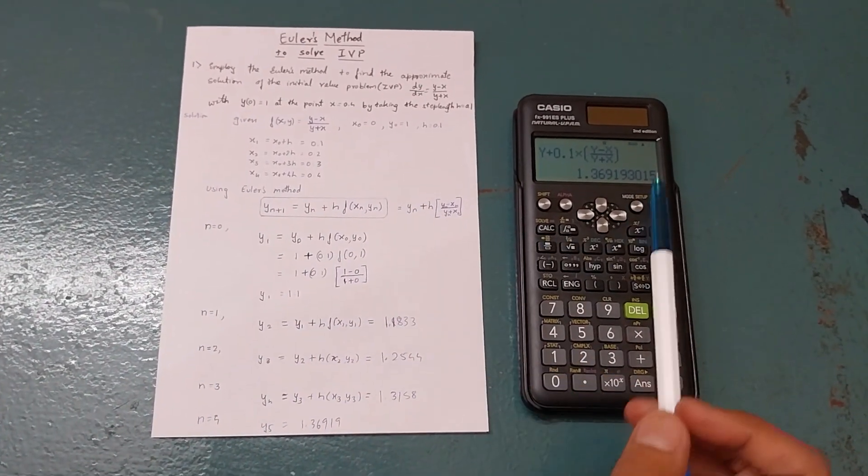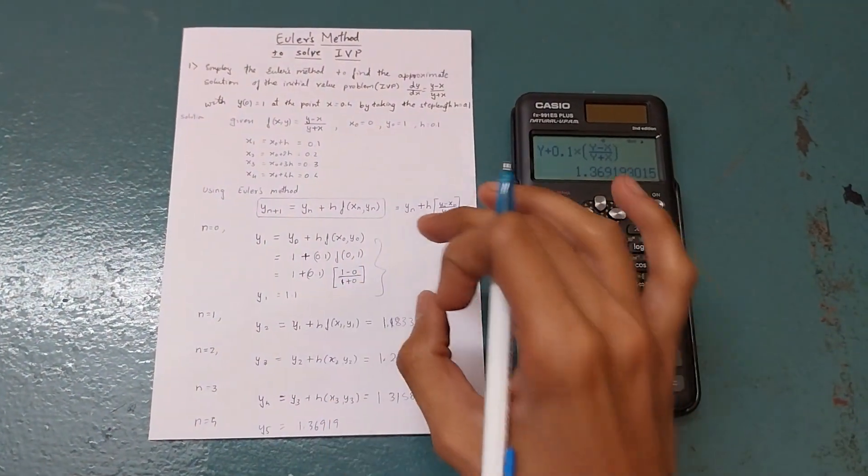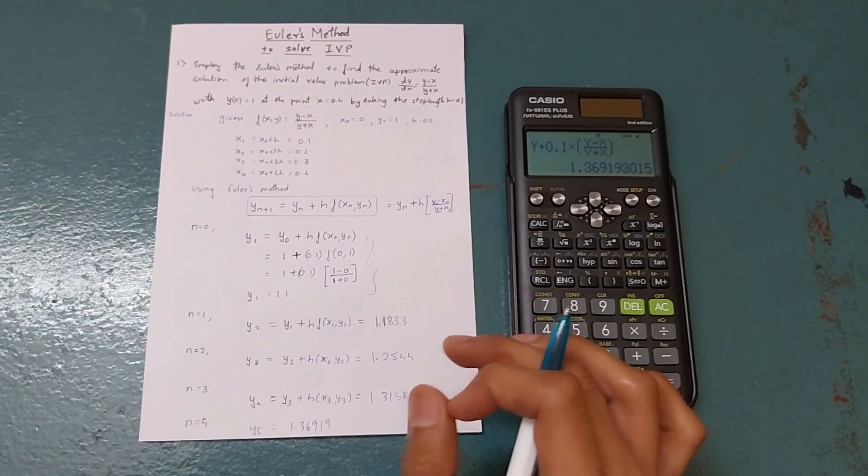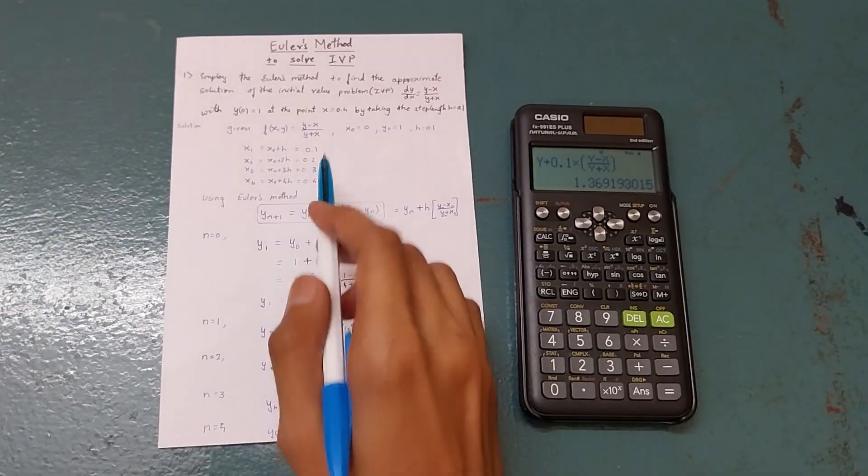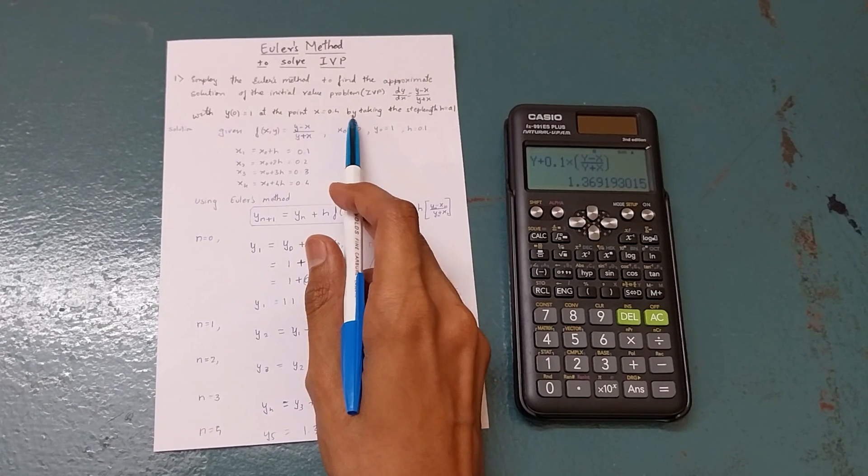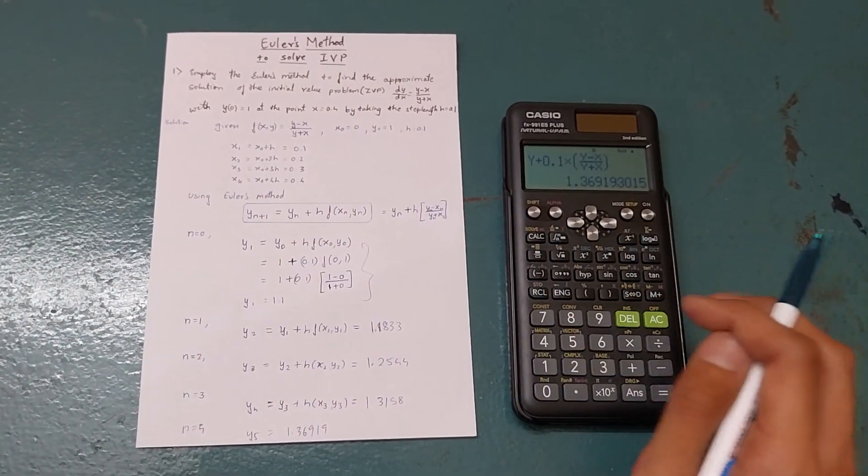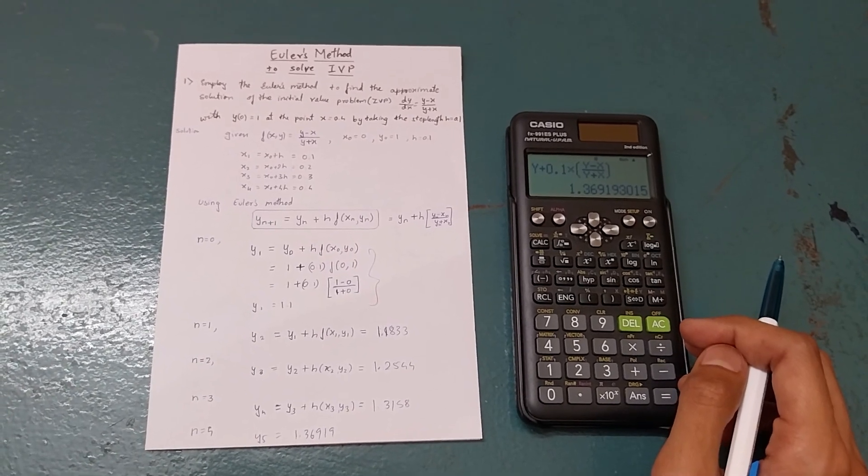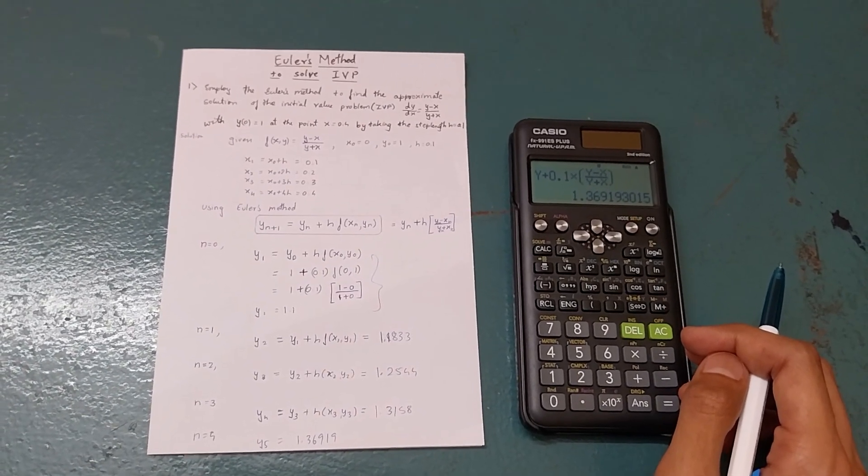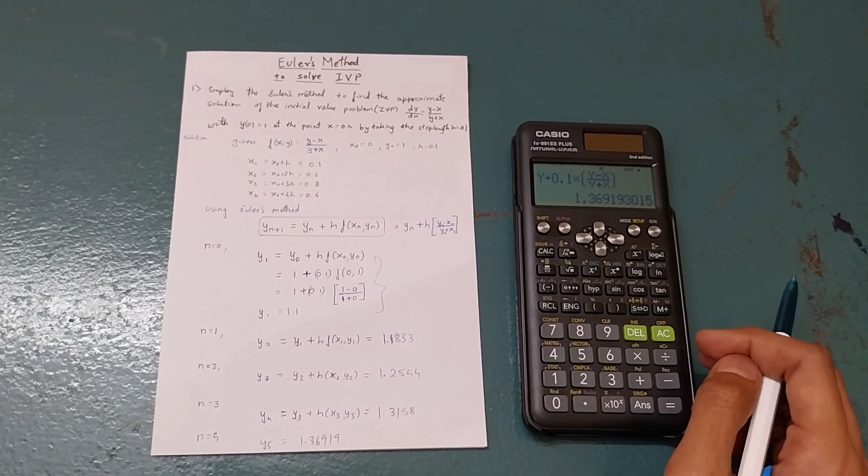Using just calculator, but in exam point of view you need to show all these methods because it carries marks. This is how you can reach x equals 0.4. This was all for today. If you like my video please like, share, and subscribe for more videos. Thank you all for watching.